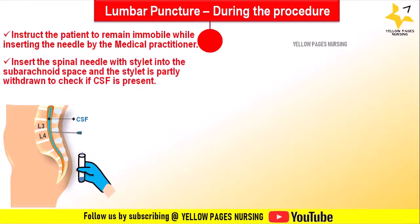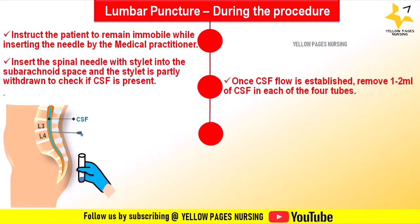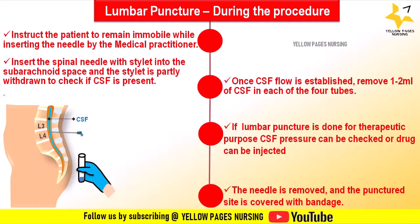The spinal needle with stylet is inserted into the subarachnoid space; the stylet is partially withdrawn to confirm CSF is present. Once CSF flow is established, 1 to 2 mL of CSF is collected in each of four tubes. Samples are sent to the lab for glucose, protein, cell count, culture, Gram staining, and cytology as indicated. For therapeutic purposes, CSF pressure may be checked or drug injected. The needle is then removed and the site covered with a bandage.